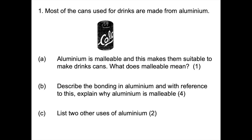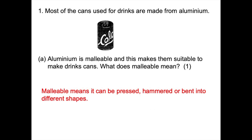Pause the video and have a go at the examination style questions. This first question asks what the term malleable means, then asks you to describe the bonding in aluminium and, with reference to the bonding, explain why aluminium is malleable. Finally, it asks you to list two other uses of aluminium apart from in drinks cans. The answer to the first part: malleable means it can be pressed, hammered or bent into different shapes. The examiner will not accept 'moulded'.